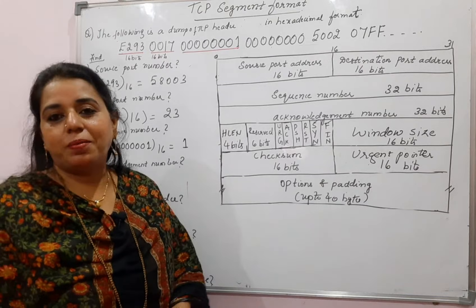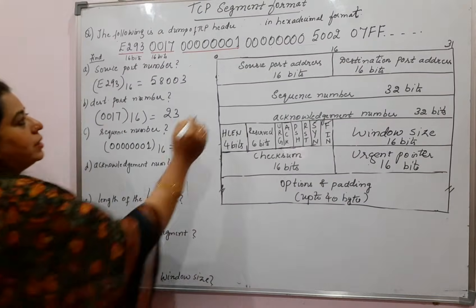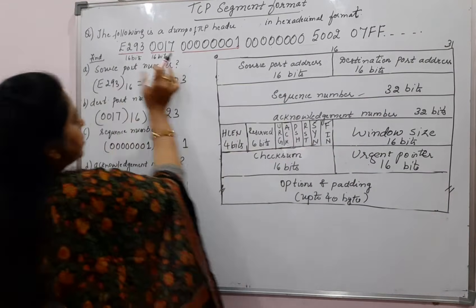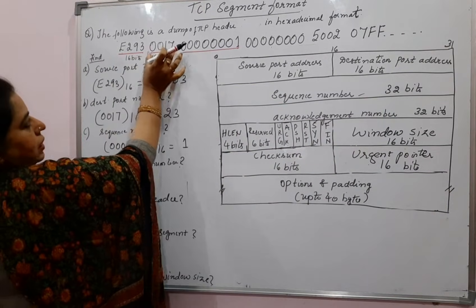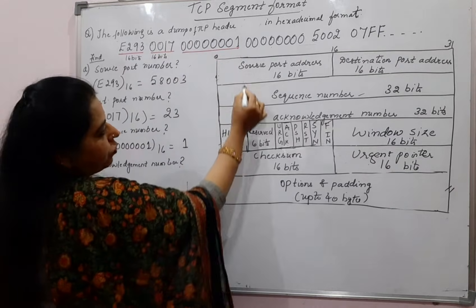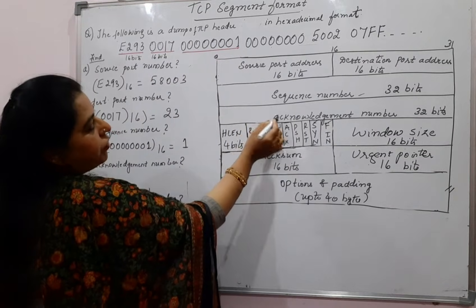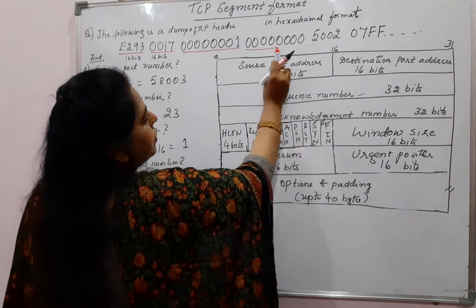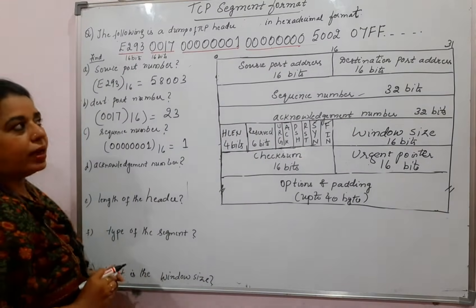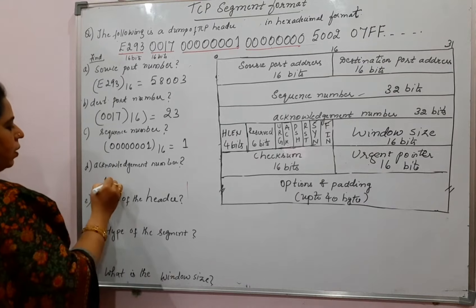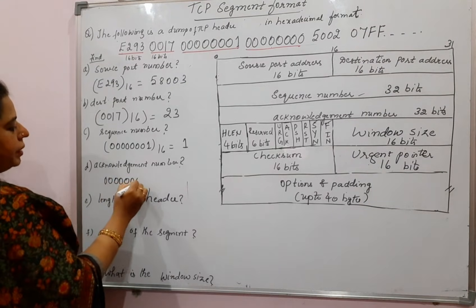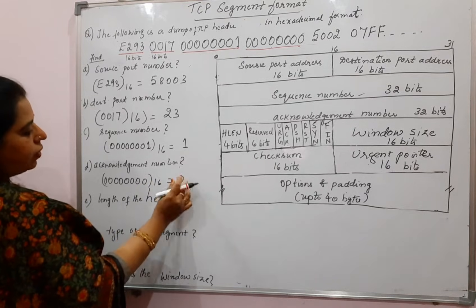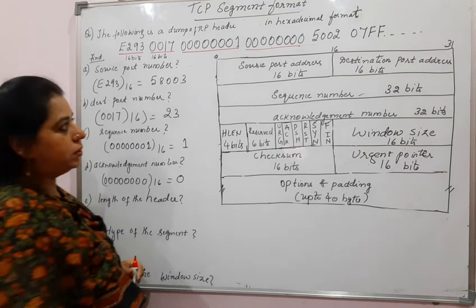Next, what is the acknowledgement number? You have completed the source port address, destination port address, and sequence number. After that, the next field is the acknowledgement number. The values given in the question are all 0s — all 32 bits are 00. So the acknowledgement number is 0 in decimal as well.